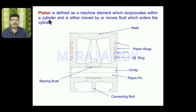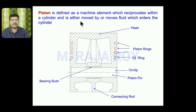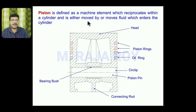First, we will see what a piston is. A piston can be defined as a machine element which reciprocates within a cylinder and either moves by, or moves, the fluid which enters into the cylinder. Sometimes the piston will move the fluid — that is the case in compressors. In the other case, it is moved by the fluid — that is the case of the IC engine. In the IC engine, the fluid enters into the cylinder, combustion takes place, and because of the gas load, the piston moves from the top dead center to the bottom dead center.